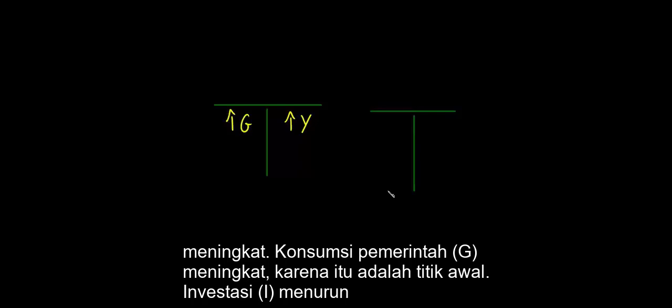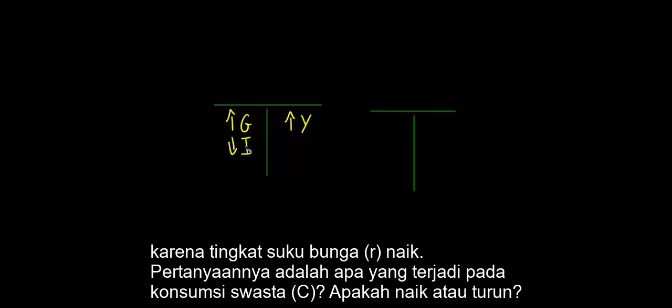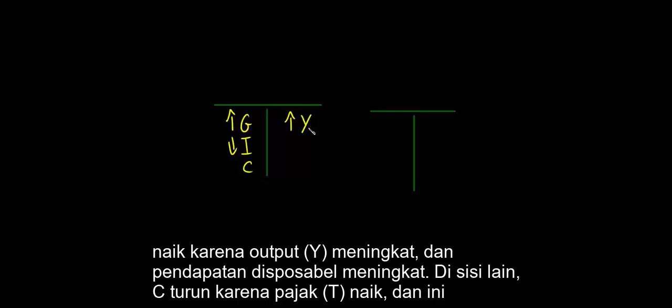The final result of all this, which we characterize through the sources and uses statement and through the capital account statement: GDP in the economy increases, C and G increase because we started with an increase in government spending. Investment I is small because the interest rate increases. The question is what happens to C. On one hand, C increases because Y increases and disposable income increases. On the other hand, C decreases because taxes increased and this reduces disposable income, so we will soon solve this dilemma.